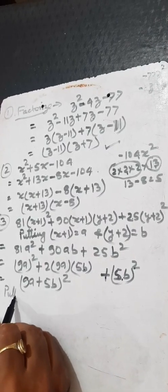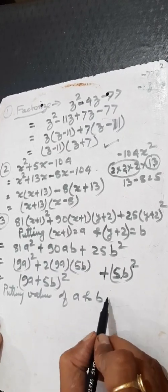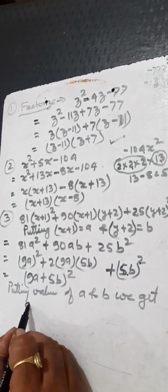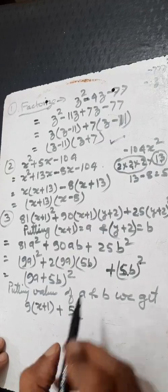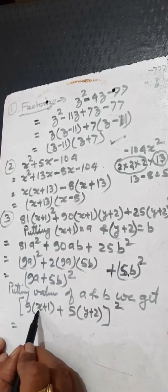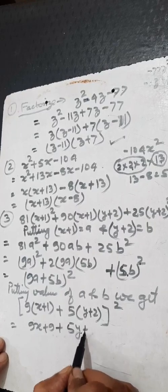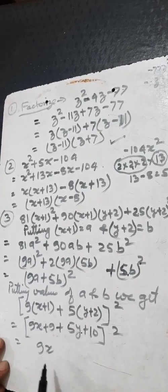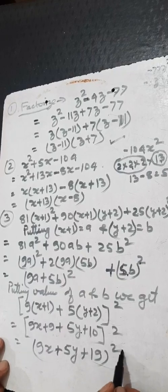Now putting the values of A and B: A equals x plus 1 and B equals y plus 2. So it becomes (9(x plus 1) plus 5(y plus 2)) whole square. Multiplying out: 9x plus 9 plus 5y plus 10, which gives (9x plus 5y plus 19) whole square. That is a very important question.